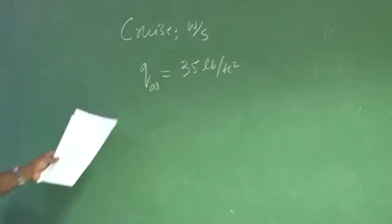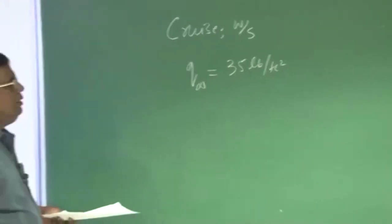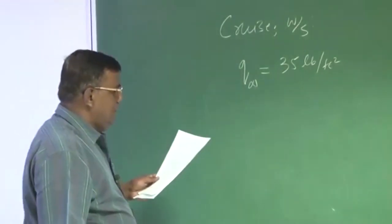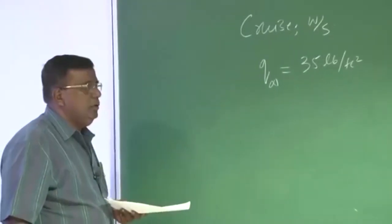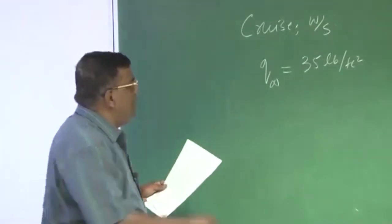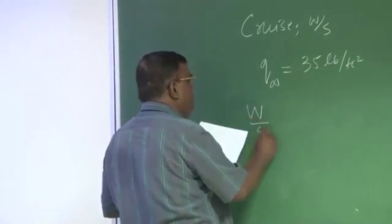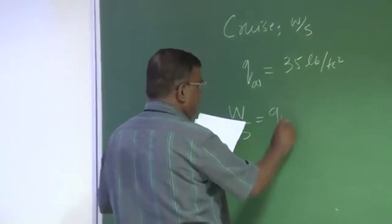It amounts to some altitude, which you can find out because you have an idea about what speed I am going to do. But if you see, when I calculated W by S for cruise, what I have done? I have taken Q infinity under root pi aspect ratio E CD naught.